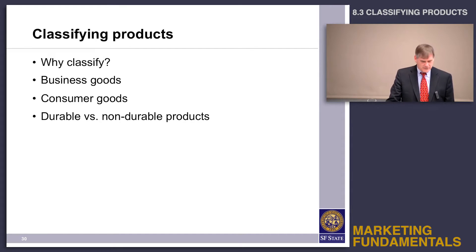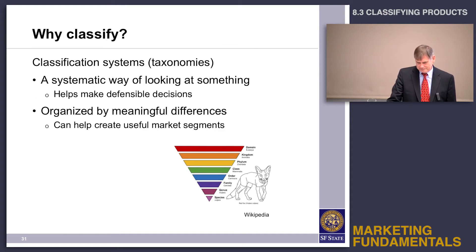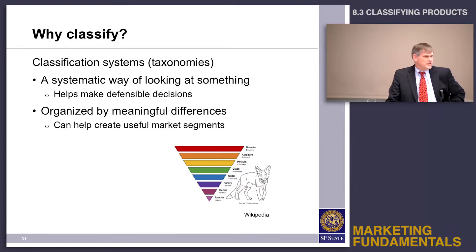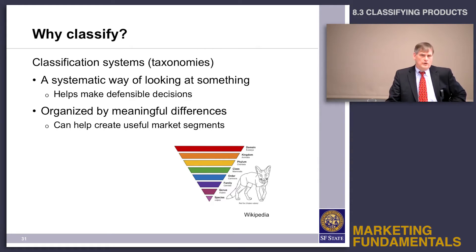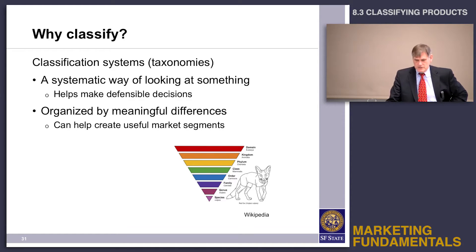A classification system — the fancy word for that is a taxonomy — and it's just a systematic way of looking at something. The value of a systematic way of looking at something is that it helps you make better decisions.